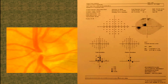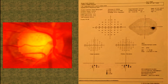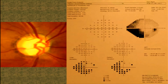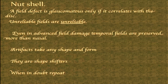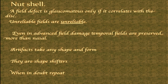This is an early glaucoma field — superior — and it corresponds to very early thinning in the inferior part of the disc. This is a glaucoma defect. One more example: there is thinning here and an inferior field defect — it is glaucoma. All I wanted to tell you is that a field defect is glaucoma only and only if it correlates with the disc.